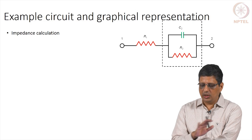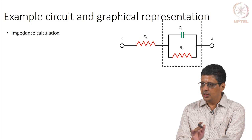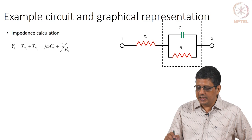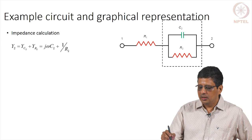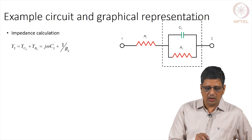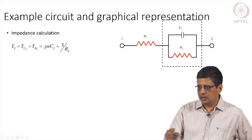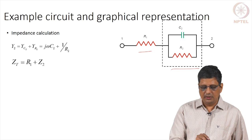We look at this circuit and calculate the impedance for it. I will call the left side as 1 and the right side as 2. The admittance of the elements in the box is the admittance of the capacitance plus the admittance of the resistance, so j·ω·C2 plus 1/R2. The sum of these gives the admittance of the box. Total impedance Z_total equals R1 plus Z2, where Z2 is the inverse of that admittance.